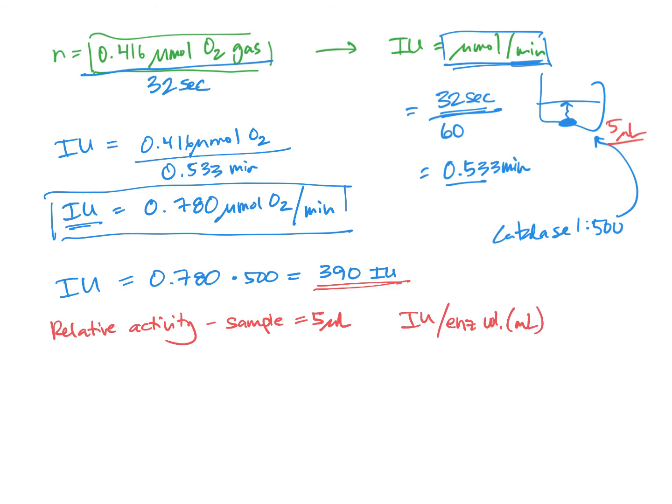Well, we can set that up. We can say relative activity is 390 IUs divided by 5 microliters. But we want to convert that to mils. So let's say 10 to the 3rd microliters is the same as 1 mil.